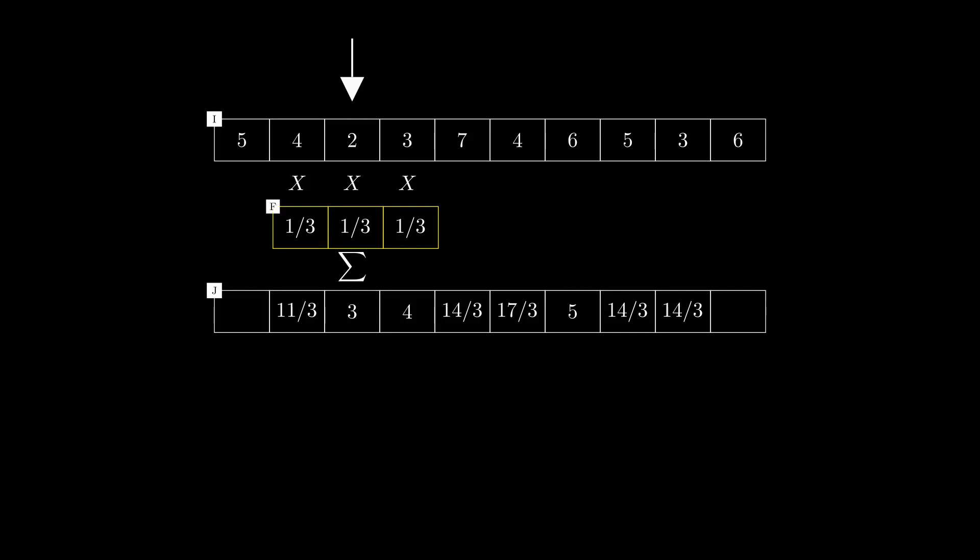We now give this new vector that our sliding machine is using a formal name. We call it filter and hence I have labeled it as F. In this case it is an averaging filter because, well, it did averaging.